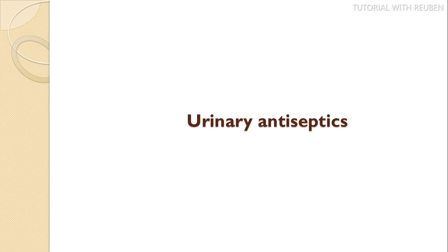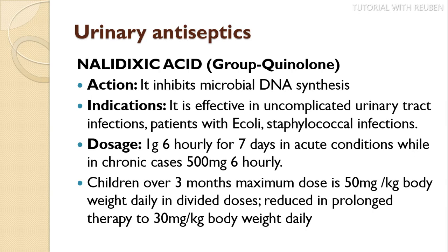The first example of urinary antiseptics are the quinolones, specifically the drug nalidixic acid. Under quinolones we also have ciprofloxacin. Nalidixic acid comes as a tablet of 250 milligrams and 500 milligrams. Its main action is to inhibit microbial DNA synthesis, and it is indicated in uncomplicated urinary tract infections, especially in patients with Escherichia coli (E. coli), staphylococcal infections, as well as dysentery.